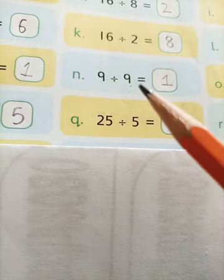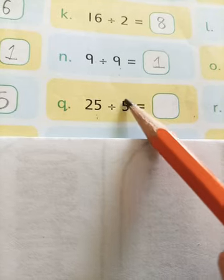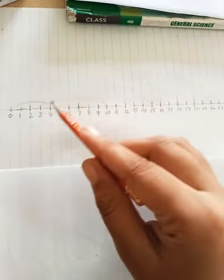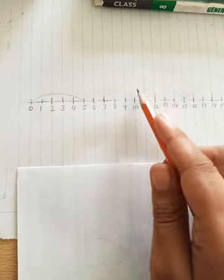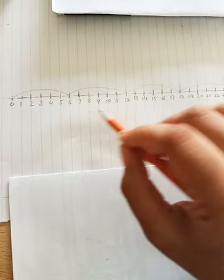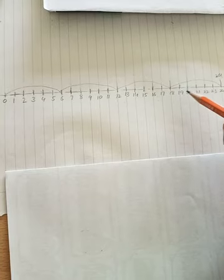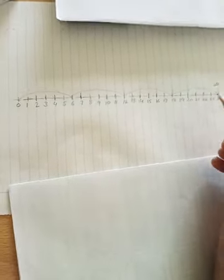Next is part Q: we will make the number line marked till 25 and then mark the jumps with the difference of 5 numbers. I have marked number 25 and made the jumps with the difference of 5 numbers. Now let's count all the jumps: 1, 2, 3, 4 and 5. Total jumps are 5. It means that 25 divided by 5, our answer is 5. Next is 24 divided by 6. I have marked the jumps on the number line with the difference of 6 numbers. Counting all the jumps: 1, 2, 3 and 4. It means 24 divided by 6, our answer is 4.